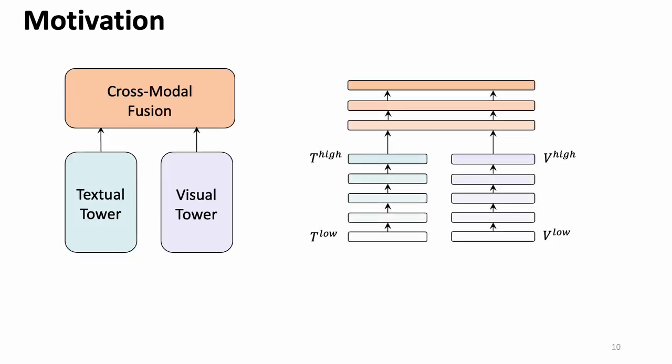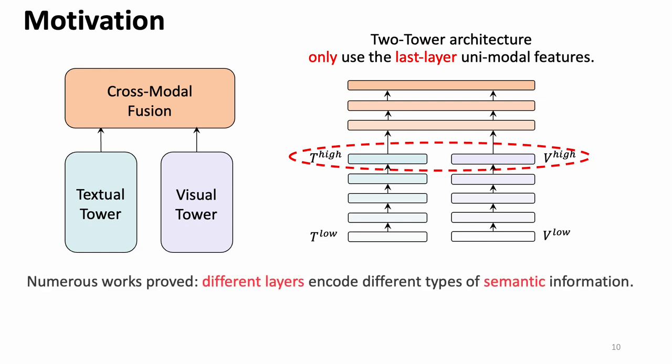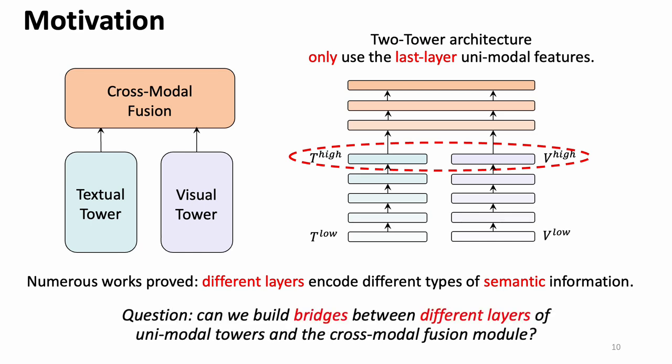If we step into the unimodal towers of the cross-modal architecture, such as the METER model, we can find they only feed the last-layer unimodal features directly into the top cross-modal fusion module, ignoring the semantic information at different layers of the deep unimodal towers. The question therefore naturally arises: can we build a bridge between different layers of pre-trained unimodal towers and the cross-modal fusion module to utilize multi-layer unimodal features?